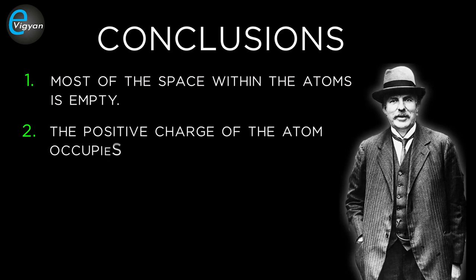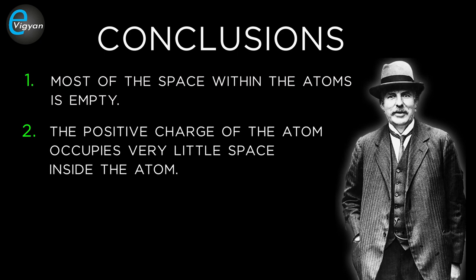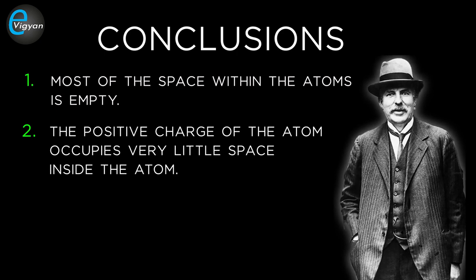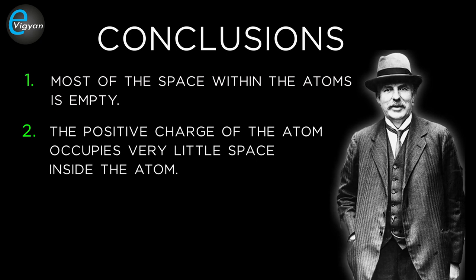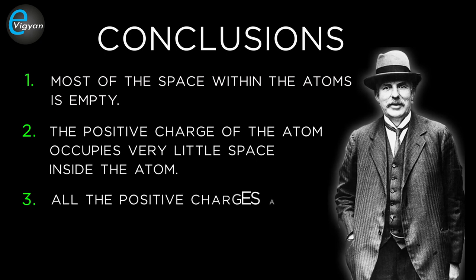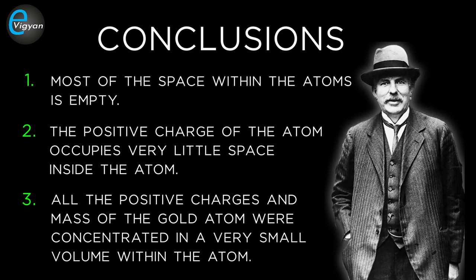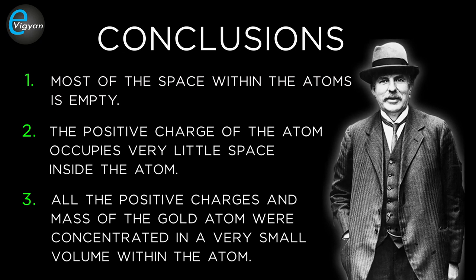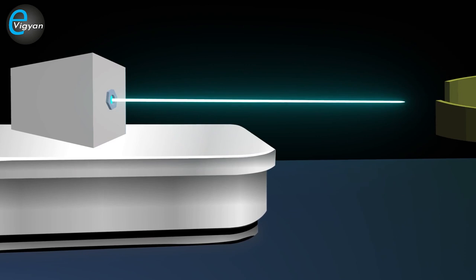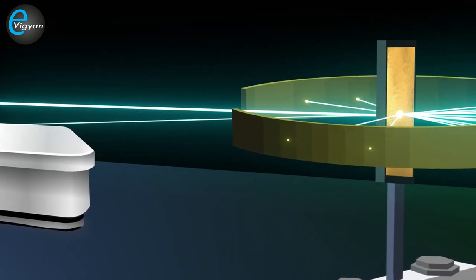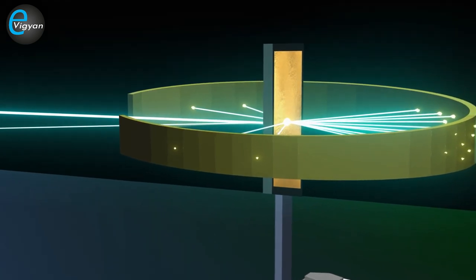The second conclusion was that the positive charge of the atom occupies very little space inside the atom. This came after it was observed that very few alpha particles were deflected by large angles or bounced back, meaning there must be some positively charged region responsible for the large deflection. His third conclusion was that all the positive charges and mass of the gold atom were concentrated in a very small volume within the atom, because a very small fraction of alpha particles were deflected by 180 degrees.